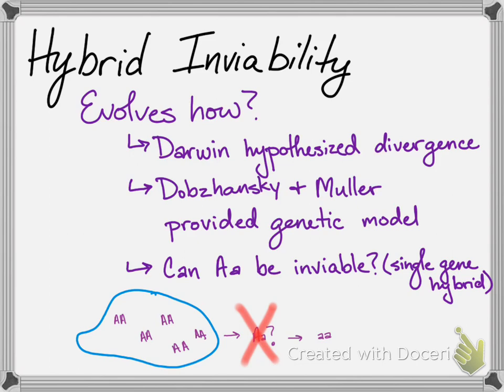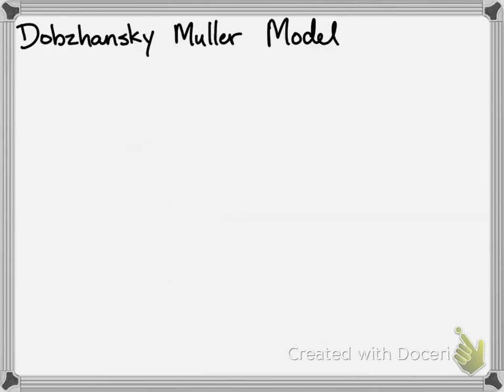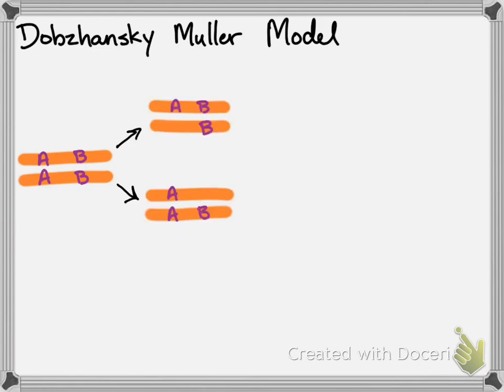But what if this happens? A population homozygous for big A and big B is split. In one population, a little a mutation arises. In the other, a little b mutation arises.